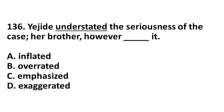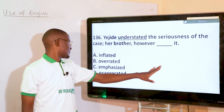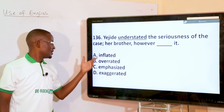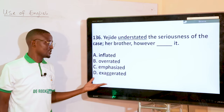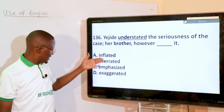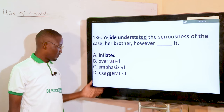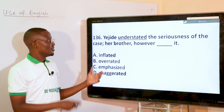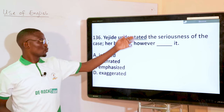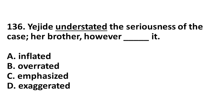Yejideh understated the seriousness of the case; her brother, however, dashed it. 'Understated' is the underlined word. The antonym options include inflated, overrated, emphasized, and exaggerated. Of course, exaggerated. While inflated and overrated can also mean making a mountain out of a molehill, 'exaggerated' is the best word that can directly fit in where it is used.